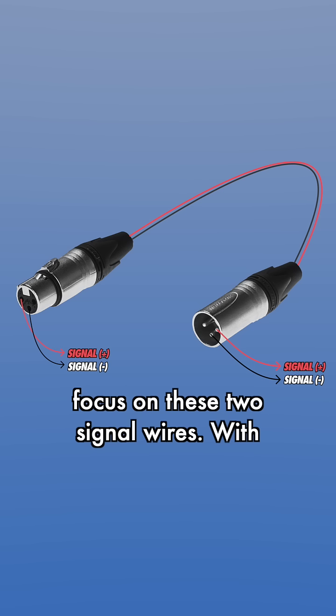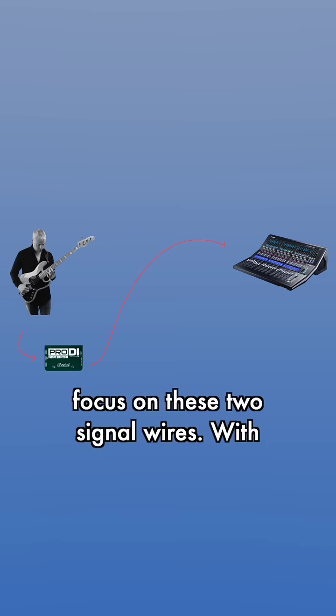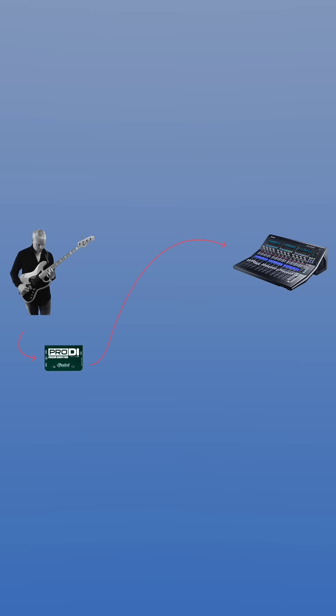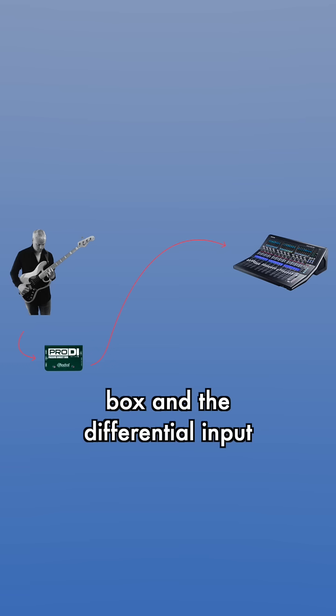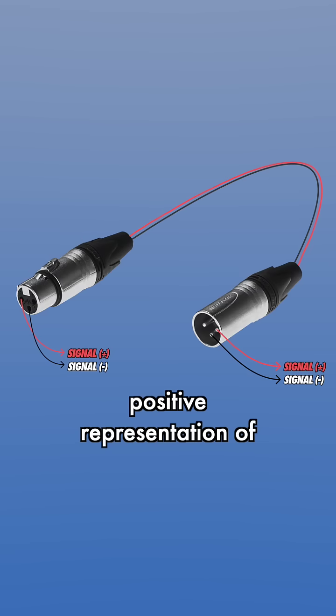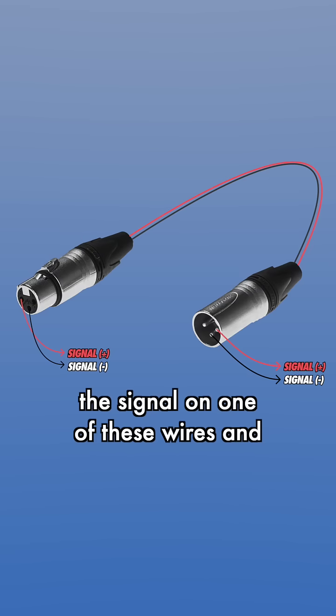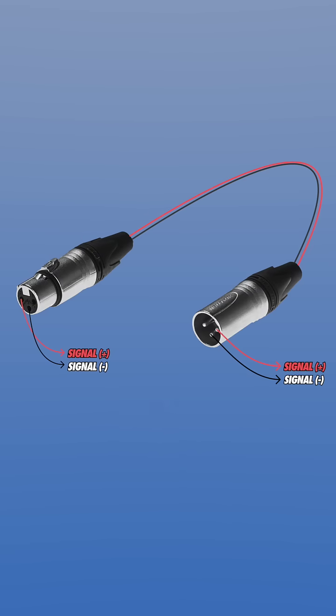Let's ignore the shield for now and focus on these two signal wires. With the transformer coil inside the DI box and the differential input on the mixer, there will be a positive representation of the signal on one of these wires and a negative representation on the other.